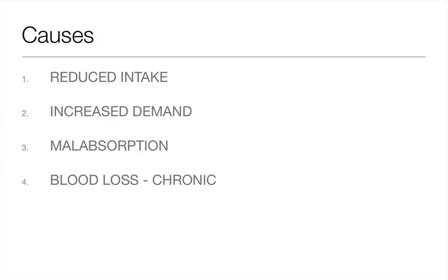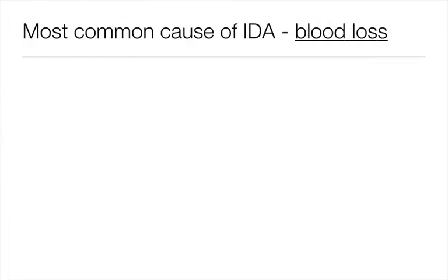The most common cause of iron deficiency anemia is blood loss. One millilitre of blood contains 0.5 mg of iron, so continuing blood loss quickly depletes stores. Even daily loss of up to 10 ml of blood is enough to cause a negative iron balance. The most common sites of blood loss are the uterus in menstruating women and the GI tract, with the upper GI tract being three times more common than the lower GI tract as a source.